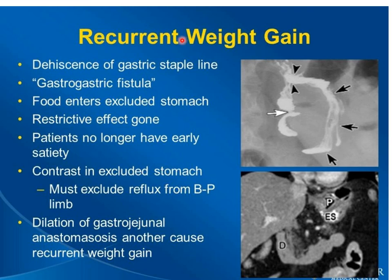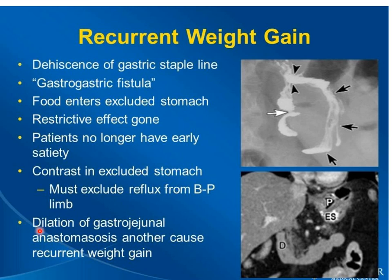Recurrent weight gain occurs with Roux-en-Y bypass surgery due to deficiency of the gastric staple line or a gastrogastric fistula, in which food enters the excluded stomach and the restrictive effect is lost. Patients no longer have early satiety. Contrast seen in the excluded stomach is shown here, due to the fistula between the excluded stomach and the small gastric pouch. Dilatation of the gastro-jejunal anastomosis is another cause of recurrent weight gain — not just fistula or dehiscence, but dilatation of the anastomosis itself.